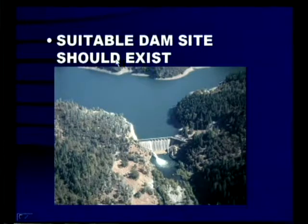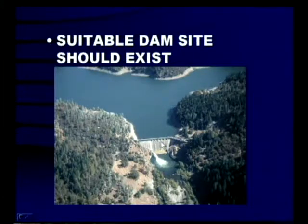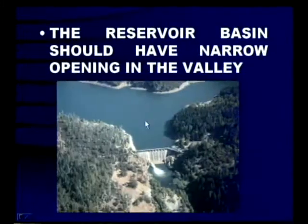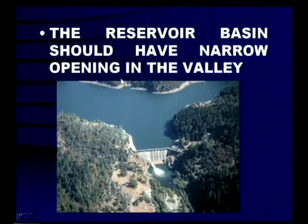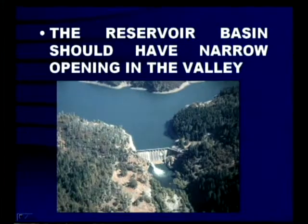A suitable dam site should exist. Hills situated on either side of the river are ideal for the location of a dam because the dam can be anchored to the sides and the length of the dam will be less. The reservoir basin should have a narrow opening in the valley — where the width of the river is very small, this reduces the cost of construction of the dam.